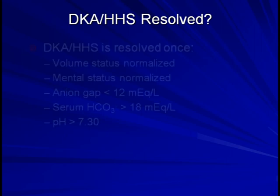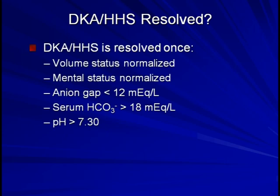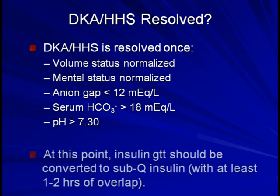How do we determine when the episode of DKA or HHS is resolved? Things to look for include normalization of volume status, normalization of mental status, normalization of the anion gap, a serum bicarb above 18 mEq/L, and a pH above 7.30. Perhaps counter-intuitively, normalization of serum glucose is not on this list and should not necessarily be expected or even particularly desired during treatment. Once the DKA or HHS is felt to be resolved, the insulin drip should be converted over to sub-Q insulin, remembering to overlap the two by at least one to two hours.